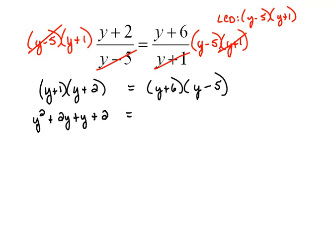Equals... now over here we're going to do the same thing. We're going to distribute the y and then distribute the 6. So we will be left with y squared minus 5y, and distributing the 6, plus 6y minus 30.